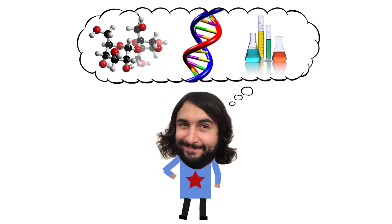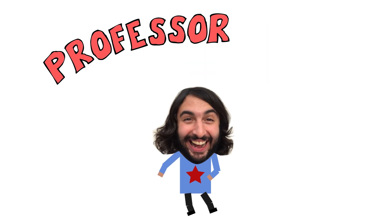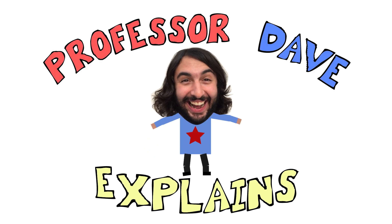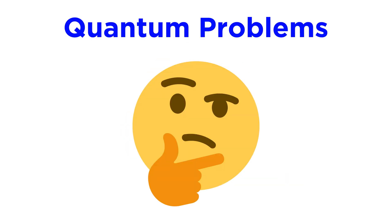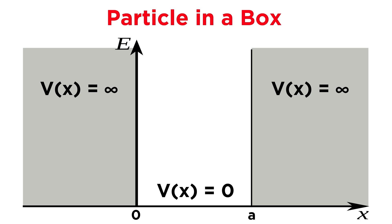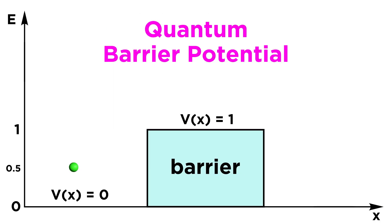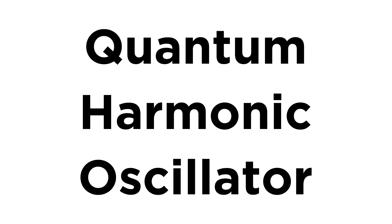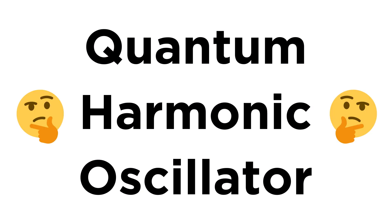Professor Dave Explains! At this point we have already solved two quantum problems, that of the particle in a box and the quantum barrier potential. Now let's tackle another, which is called the quantum harmonic oscillator. If this term sounds confusing, don't worry. Before we dive into all the math, let's just go over a few general concepts for context.